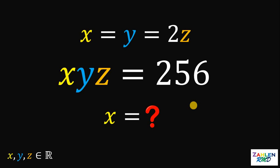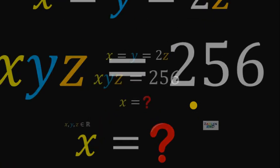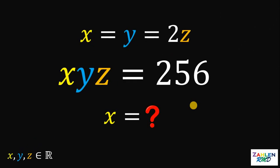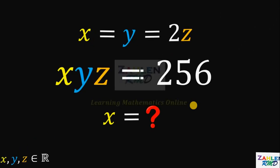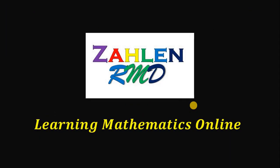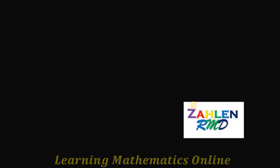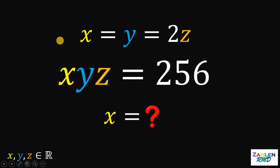Good day everyone, here's our math challenge for today. Here's our question: given that x equals y equals 2 times z, and the value of the product x, y, z equals 256, then the question is, what is the value of x?